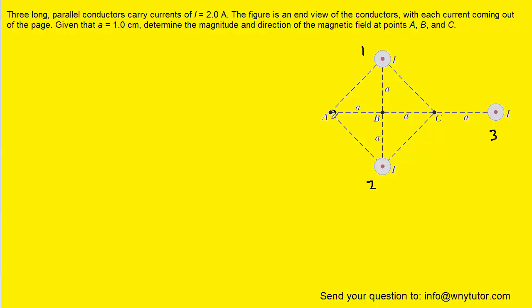Now we're going to calculate the magnetic field at point A first. To do that, we want to note that we have four right triangles all connected together. These right triangles are actually isosceles right triangles because two of the legs are the same. In the case of isosceles right triangles, the hypotenuse can be represented as the side times the square root of 2. So the distance from wire 1 to A is A√2, the distance from wire 2 to A is also A√2, and the distance from wire 3 to point A is 3A.